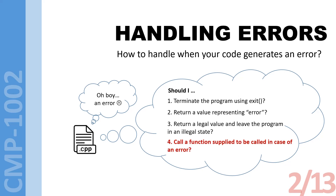The fourth option is calling a specific function whose only job is handling error cases. If there is no error, that function will not be called; if there is an error, it will be called. The main idea is to differentiate between the code that does what it's supposed to do and the code that handles error cases — separating these two responsibilities among two different code bases or function groups.